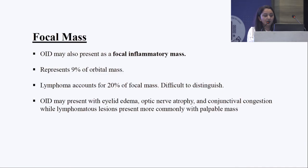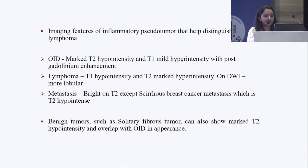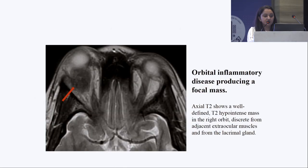Idiopathic orbital inflammation sometimes presents as a focal mass — almost 9% of cases can present this way. It presents with dilated edema or, if more extensive, optic nerve atrophy, and must be differentiated from lymphomatous lesions, which present more commonly as a palpable mass.